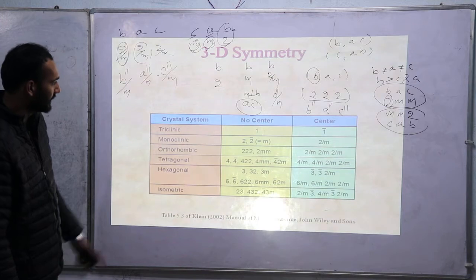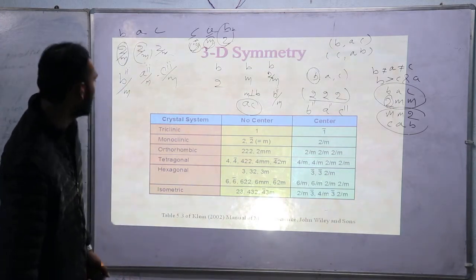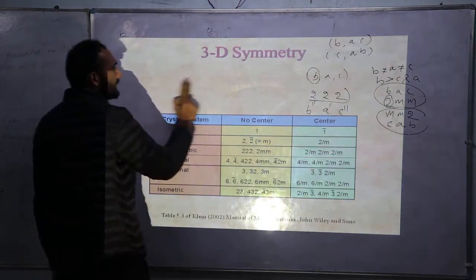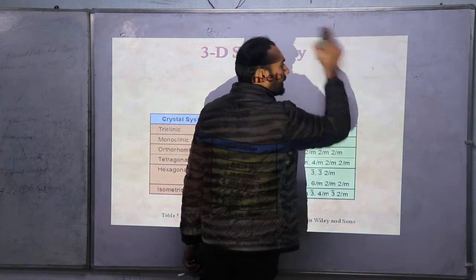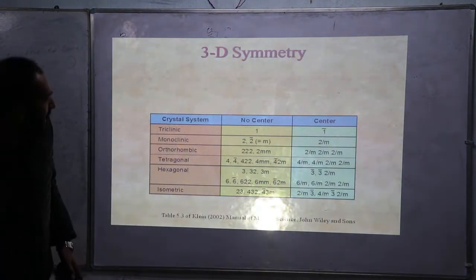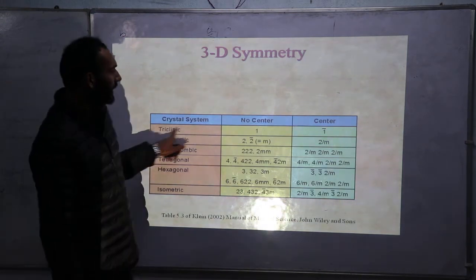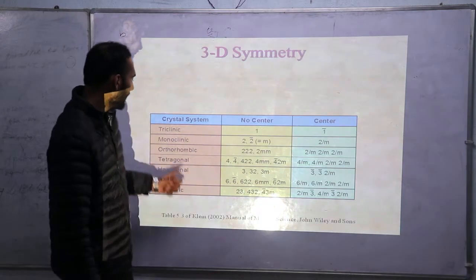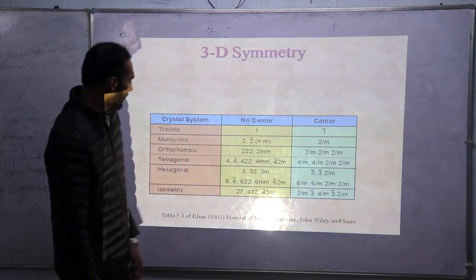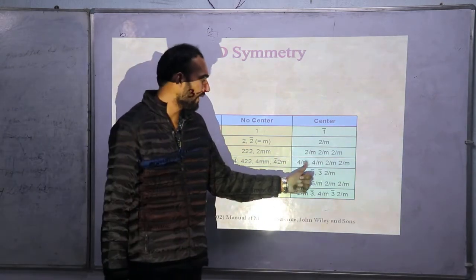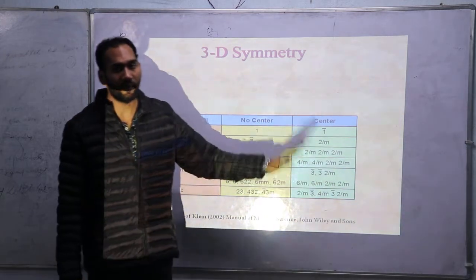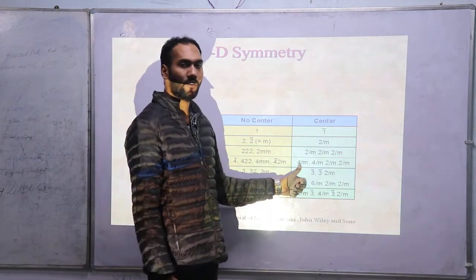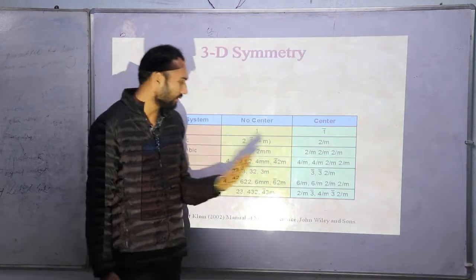The 32 classes are divided on the basis of different crystal systems and whether each class has a center of symmetry or not. In triclinic, there is one class — the normal class — that has a center of symmetry. In monoclinic, only the normal class has a center of symmetry. In orthorhombic, only the normal class has a center of symmetry. In the tetragonal system, there are two classes with a center of symmetry: the normal class and 4/M, the tetragonal dipyramid.